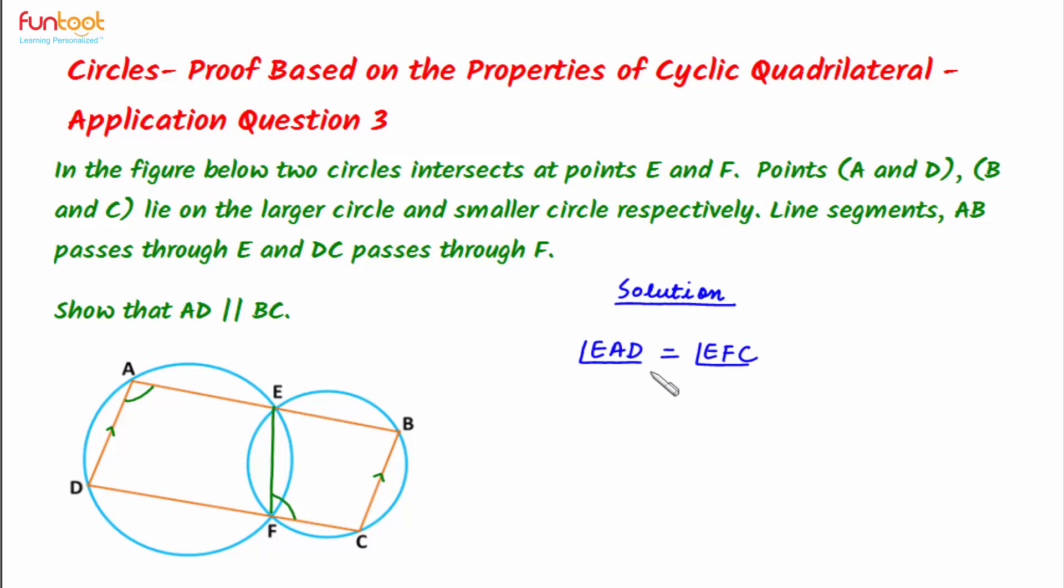We know that in a cyclic quadrilateral, opposite angles are supplementary. So angle EFC plus angle EBC will be equal to 180 degrees.